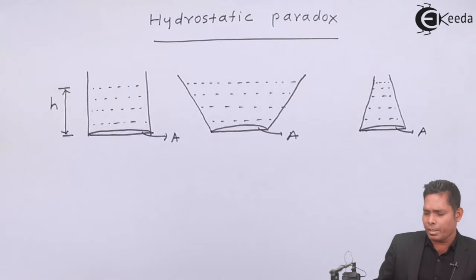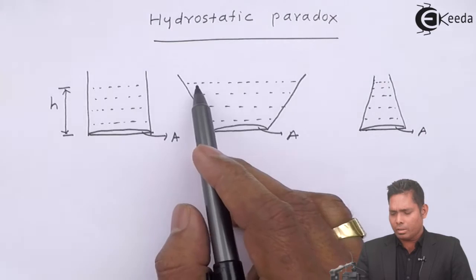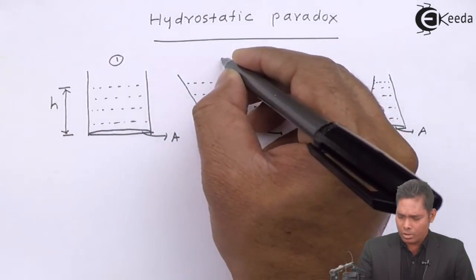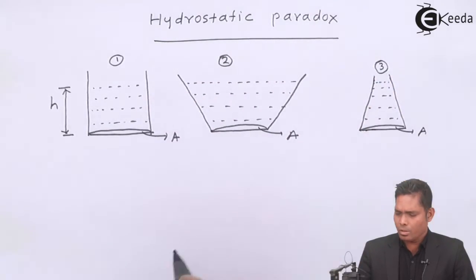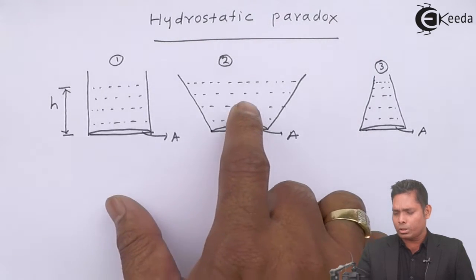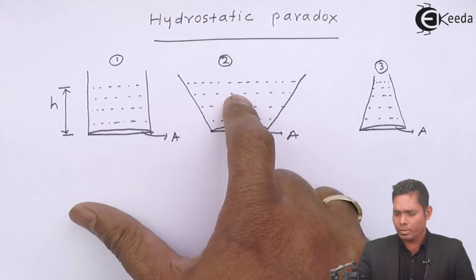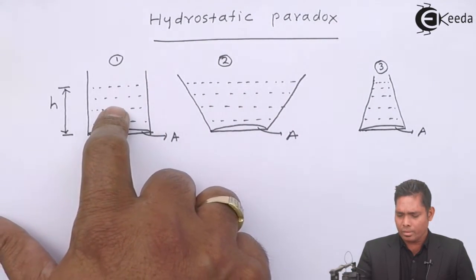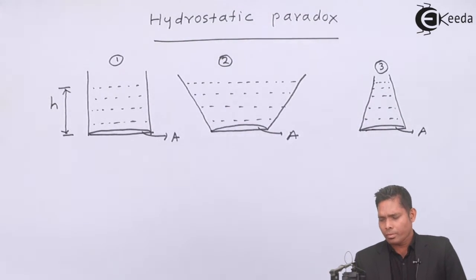It is very clear that the amount of liquid in vessel one, two, and three differs. The mass of the liquid in vessel two is the greatest — maximum — then vessel one, then vessel three. Vessel two has the most mass, vessel one is in the middle, and vessel three has the least mass.